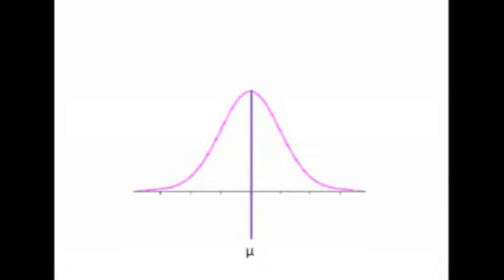Here is the infamous mu. Remember, the Greek letter mu stands for the population mean. If you saw the letter mu, you would immediately know this is a population distribution. Mu is a measure of central tendency — a middle value — so mu sits right in the middle. One half of the distribution lies to the left and one half lies to the right.